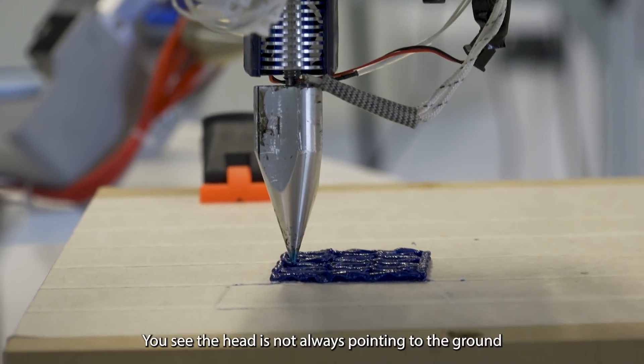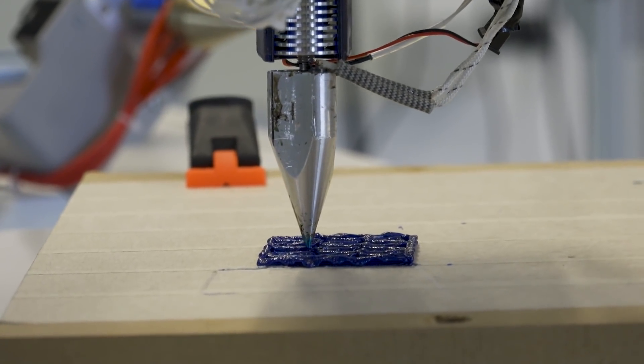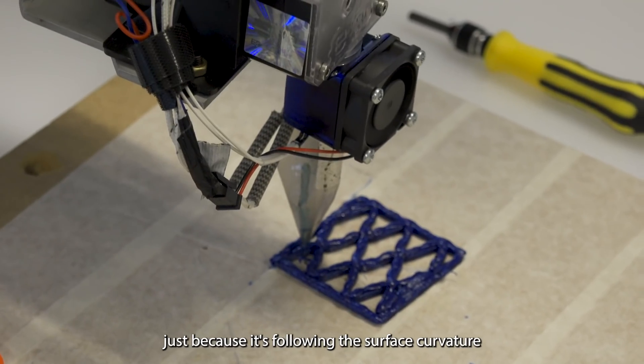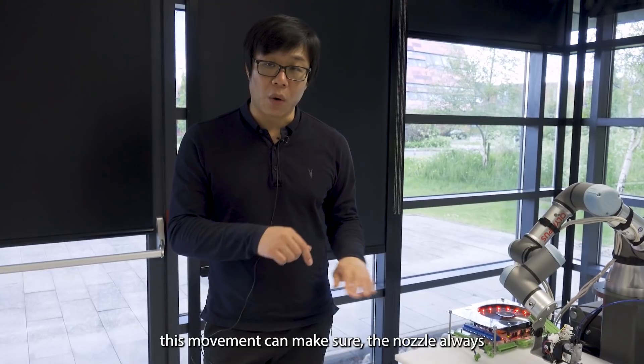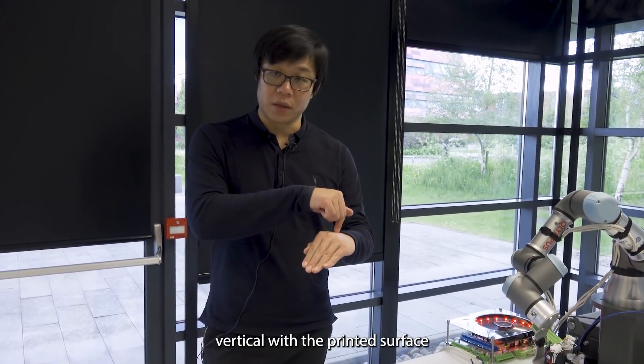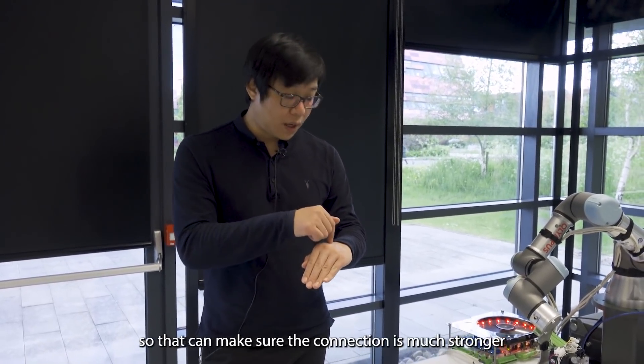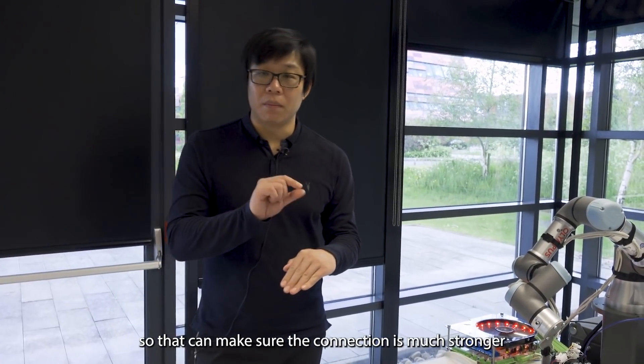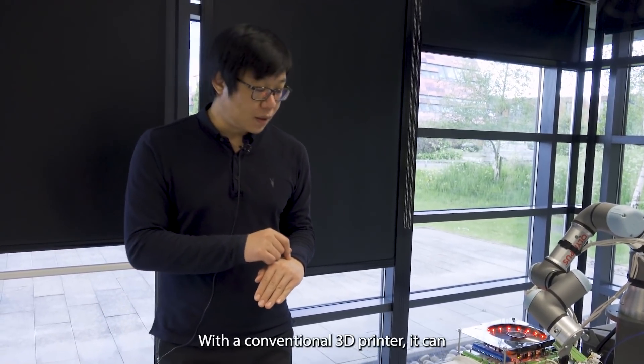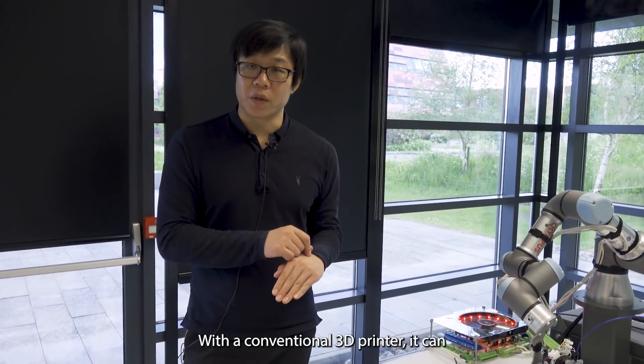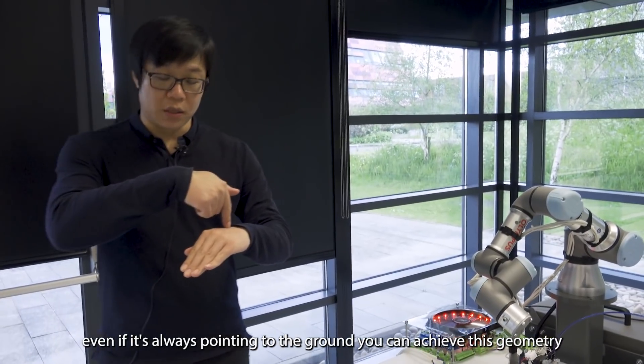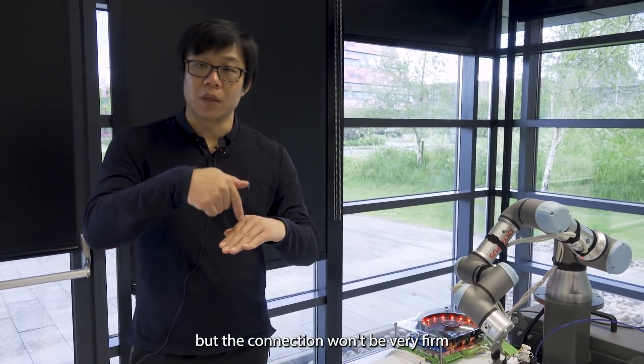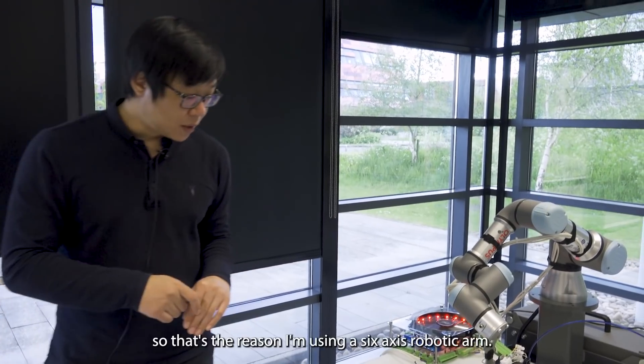You see the head is not always pointing to the ground, just because it's following the surface curvature. This movement can make sure the nozzle is always vertical with the printed surface. So that can make sure the connection is much stronger. With the conventional 3D printer, even if it's always pointing to the ground, it can achieve this geometry, but the connection won't be very strong. So that's the reason I'm using 6-axis robotic arm.